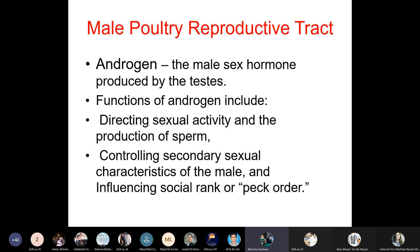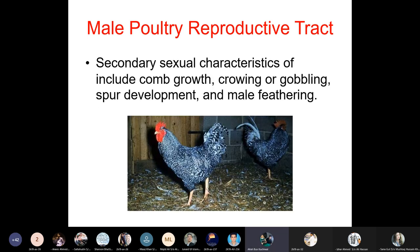Androgen is the male sex hormone produced by the testes in poultry. Its functions include directing sexual activity and sperm production, controlling secondary sexual characteristics of the male, and influencing social rank (peck order). Secondary sexual characteristics of male poultry include comb growth, wattles, spur development, and male feathering.